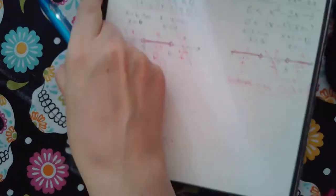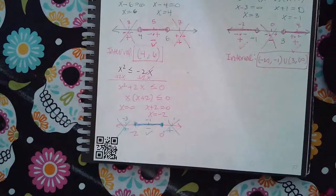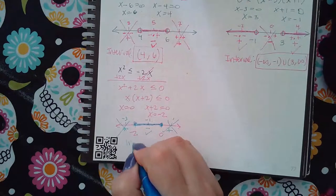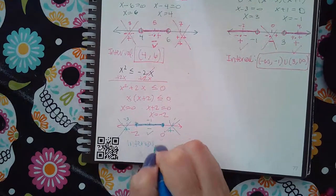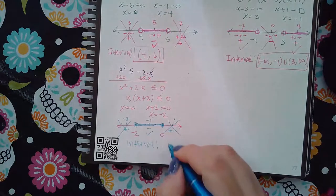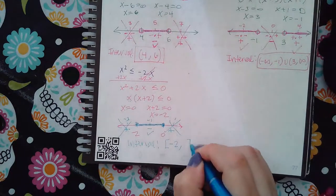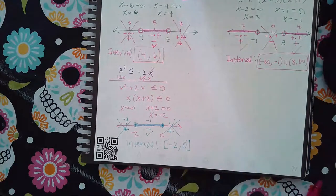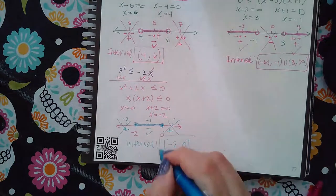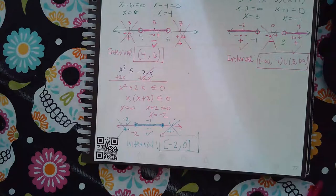But in later topics, just to start getting the hang of it, they're going to ask you for the interval. And if they do, it's a solid, which means bracket, negative 2. And on the right, solid, so a bracket and zero. And this is the interval you use for that solution.